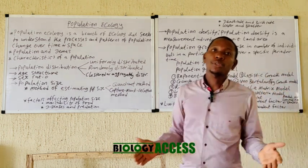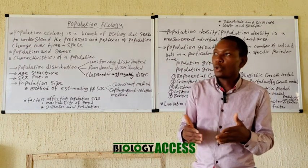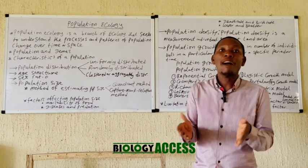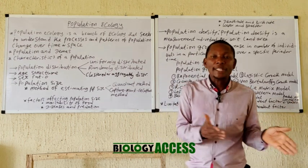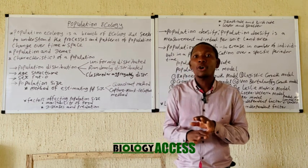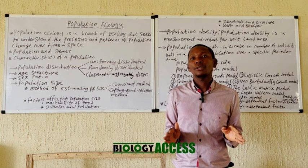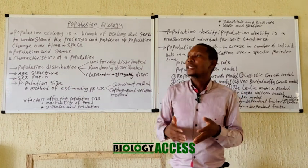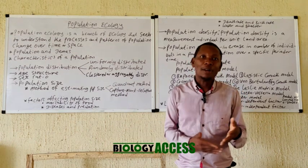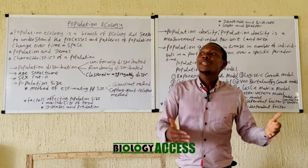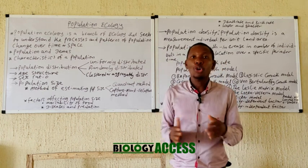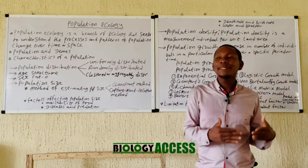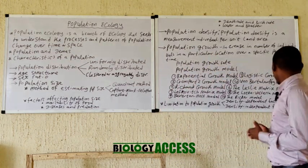For example, density-independent factors include environmental stressors such as contaminants in an aquatic environment — if the toxicity level is so high, it will kill the organisms whether we have 100 catfish in the pond or just one. The population size has no influence on the outcome. Other examples include environmental disasters such as earthquakes, which negatively affect organisms whether the population is large or small.